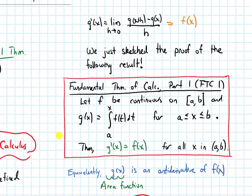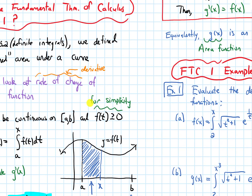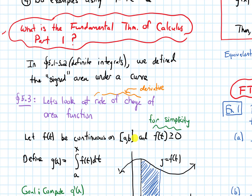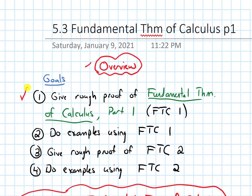I want to make a couple of quick comments. This was just a sketch of the proof because I made a key assumption that f of t is greater than or equal to 0 to help visualize it. The theorem doesn't require that — it's true in general, even when the function is negative or switches between positive and negative. That assumption was just made to visualize it better. We've finished goal one: giving a rough proof of the Fundamental Theorem of Calculus Part 1. In the next video, we will do some examples where we apply it.